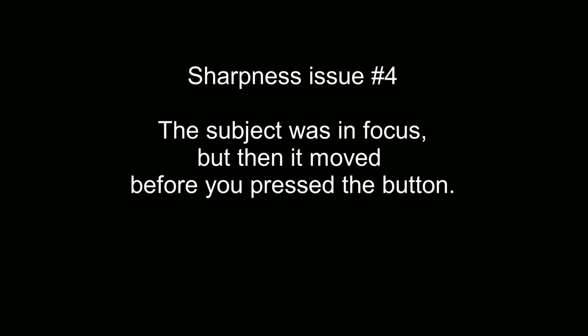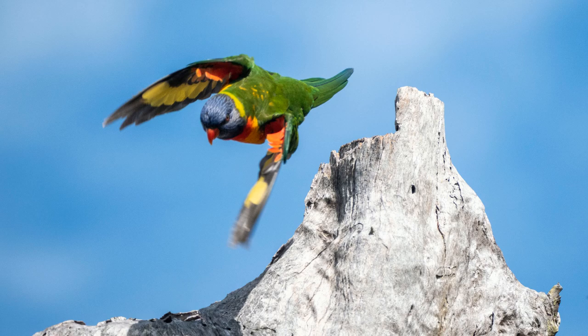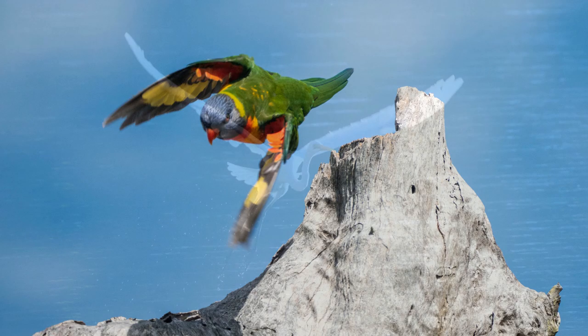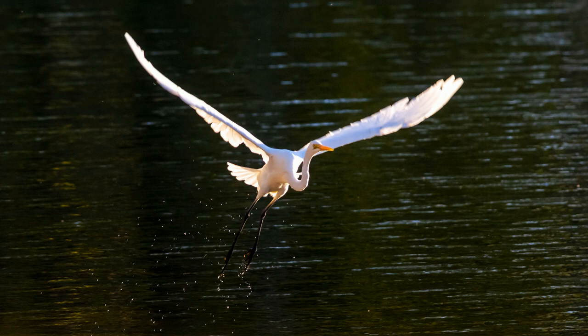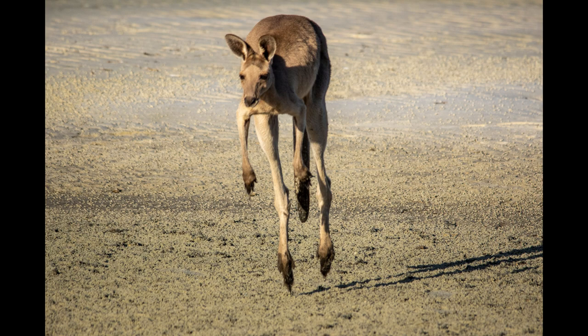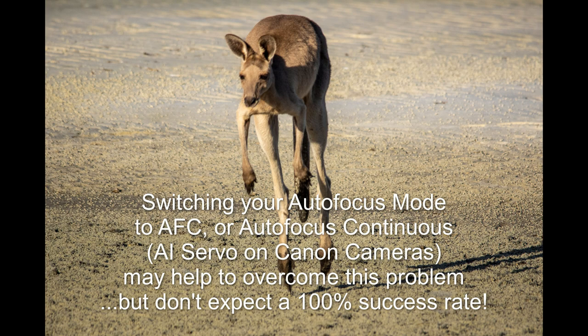Number four: the subject was in focus, but then it moved before you pressed the button. This is a common issue with bird photographers. You focus on a bird sitting on a branch, waiting for the moment it takes off — but in that moment it moves just a little closer to the camera, and suddenly it's not in focus anymore. Remember that a telephoto lens creates a relatively shallow depth of field, meaning the area in front and behind the point you focus on won't be so sharp. So if you focus on a kangaroo 20 metres away, but when you shoot the kangaroo is only 19 metres away — it was in focus when you focused, but not when you took the photo.